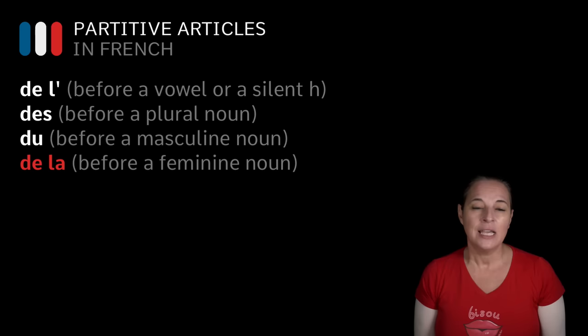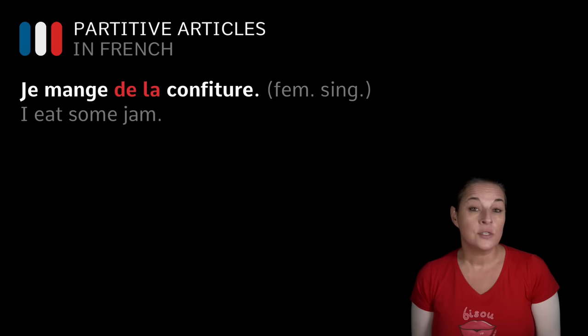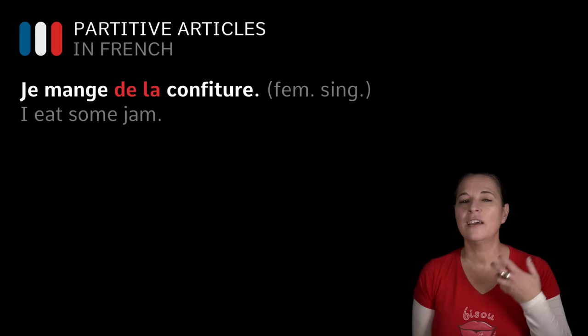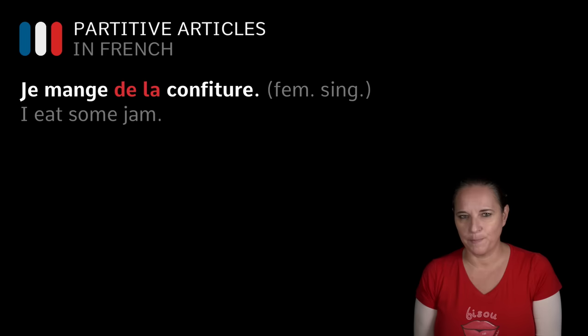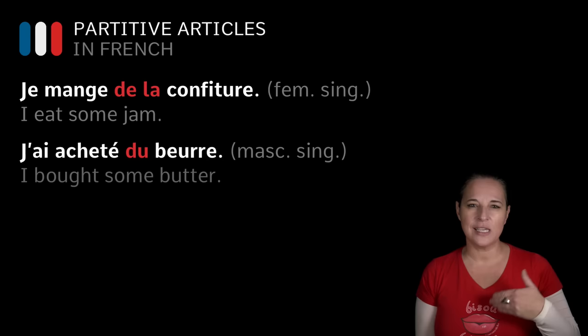Let's have a look at some examples using various nouns. 'Je mange DE LA confiture' — I eat some jam. So why are we using DE LA? Because we are using CONFITURE — the noun is feminine, so it has to be DE LA. 'J'ai acheté DU beurre' — I bought some butter. So why are we using DU this time? Because BEURRE is masculine and it is singular.